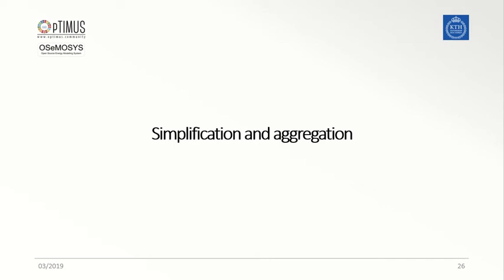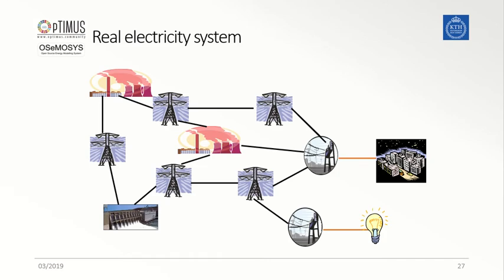Let me now explain why and how we should try to simplify and aggregate the elements of our energy system, and what is the benefit of this approach when modeling an energy system. When looking at a real electricity system and how it is designed, it is possible to notice immediately how several technologies are repeated, like the electricity networks that connect different power plants to industries or residential buildings, or two units of the same type of power plant located in different areas of the country to supply different shares of the demand side.